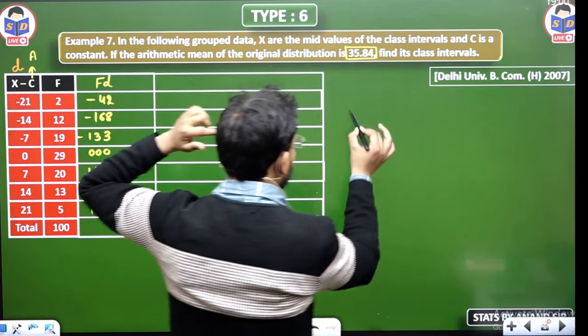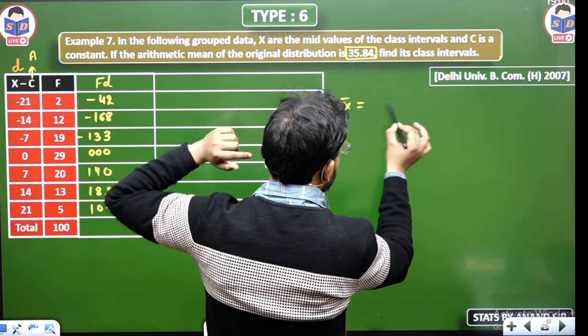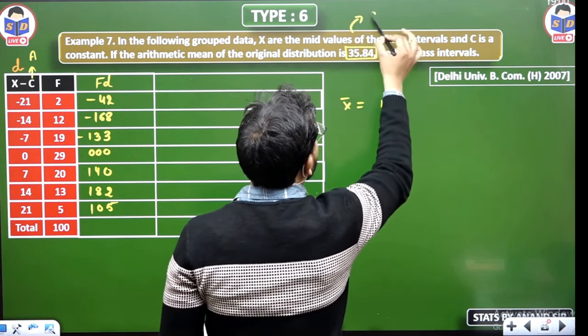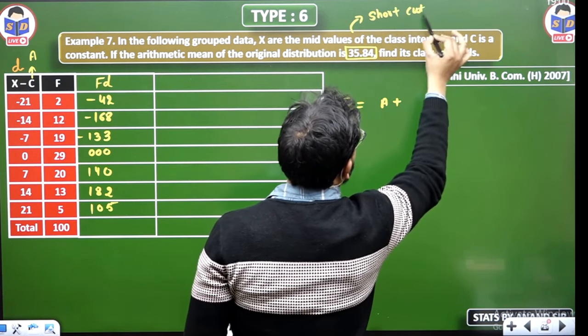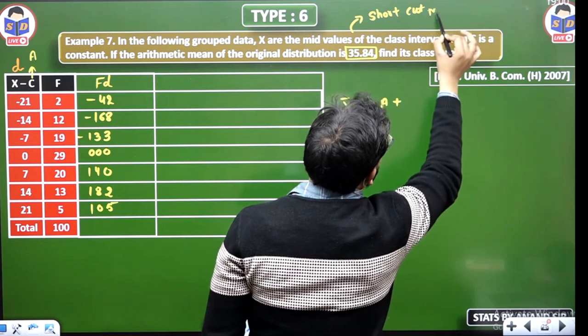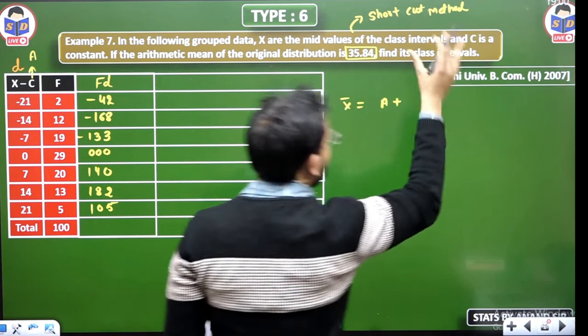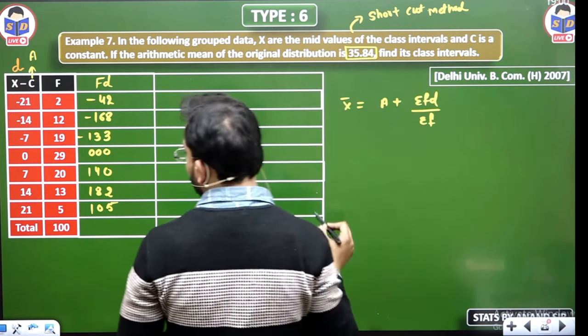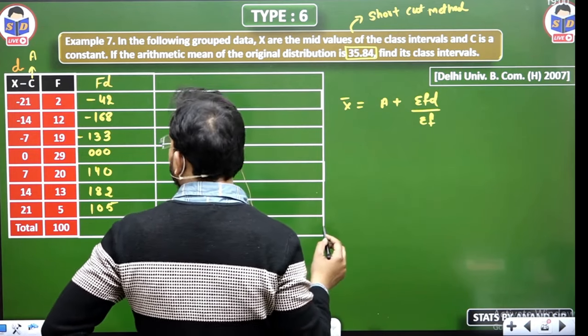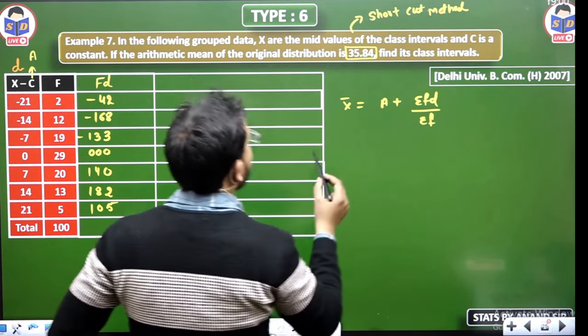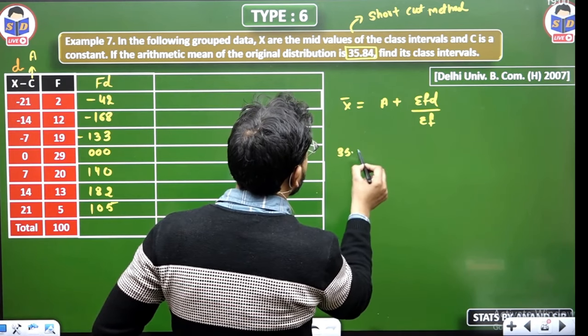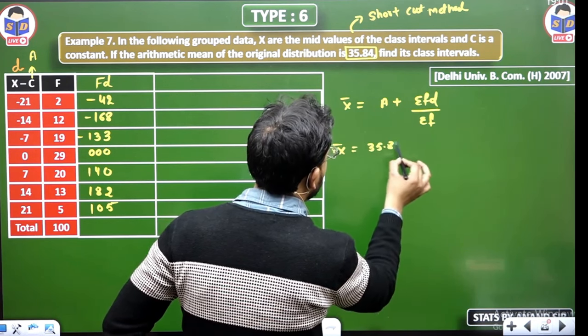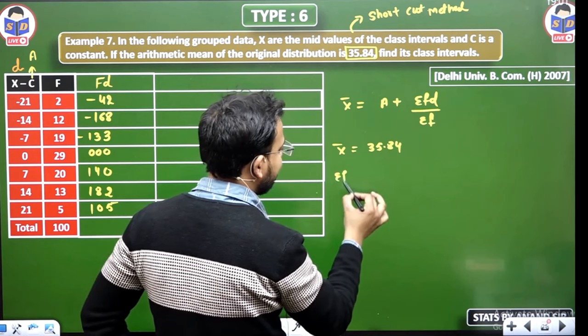Now you have FD. Now our mean formula, what is it? Mean equals to, if you see, then A plus, whenever your shortcut method is. Basically, question is related from where? This question is, because you have D given, shortcut method. So shortcut method question is related, shortcut method formula you have to apply, submission FD upon submission F. So X bar, X bar we have, mean already given is 35.84.